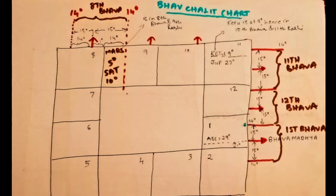From the Ascendant at 29 degrees, count 15 degrees backward and count 15 degrees forward. You will see that the first Bhava starts at 14 degrees in the sign of Leo or Sima and it ends at 14 degrees in the sign of Virgo or Kanya. I have shown this first Bhava with brown font and brackets. Similarly, where the first Bhava starts, if you count 15 degrees backward you reach the Bhava Madhya of the 12th Bhava. Count another 15 degrees backward and you reach the start of the 12th Bhava. Like this you can go on creating the Bhavas — 1st, 2nd, 3rd, 4th and so on, up to the 11th and 12th Bhava, as shown in the brown font.